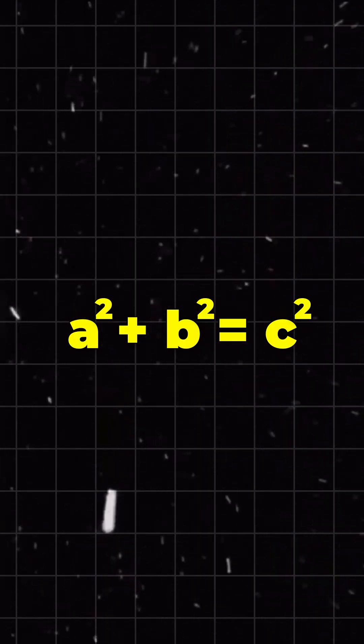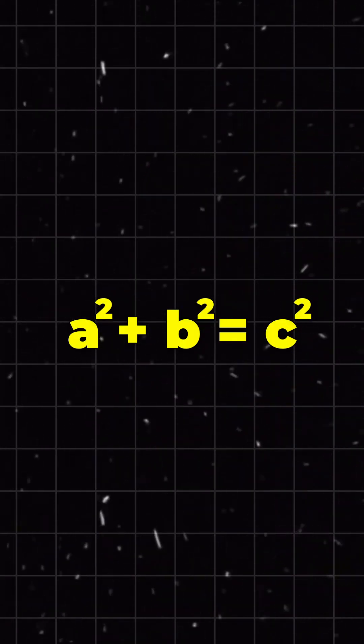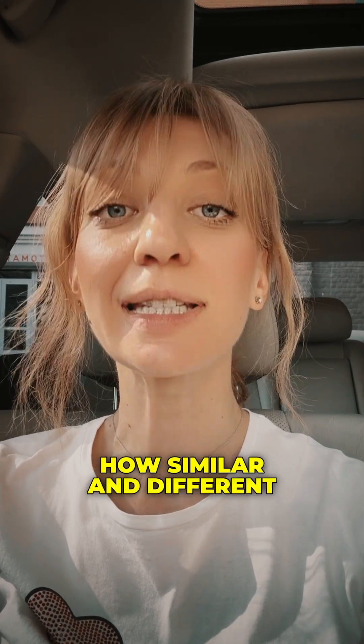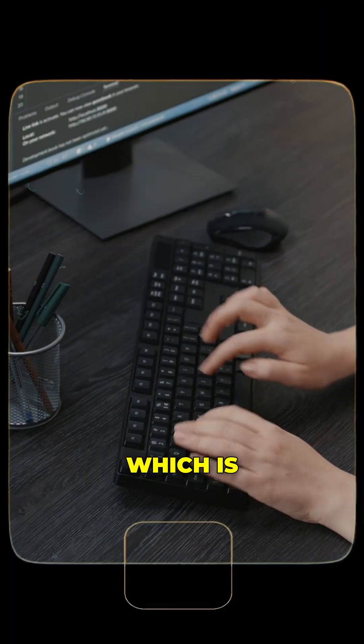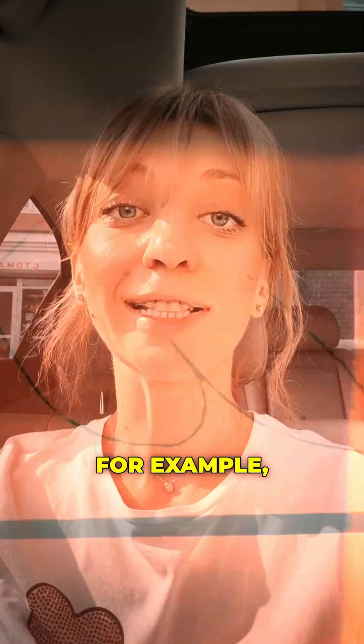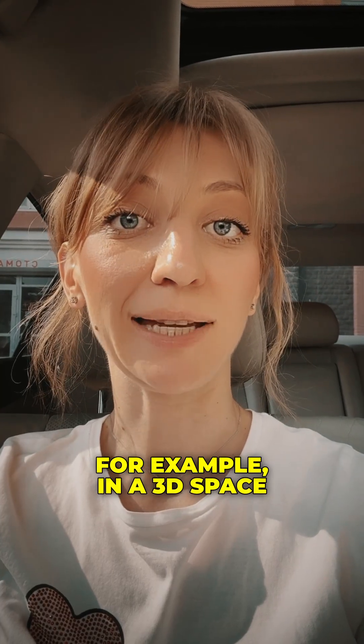The formula a squared plus b squared equals c squared helps determine how similar and different data points are, which is crucial for algorithms like k-means clustering. For example, in a 3D space,